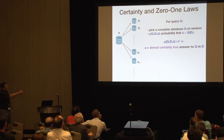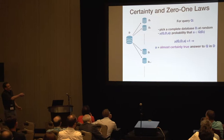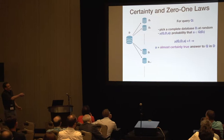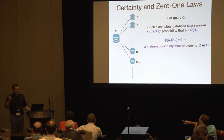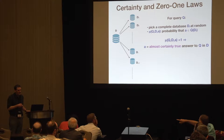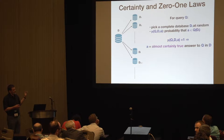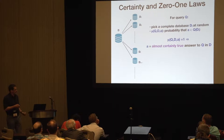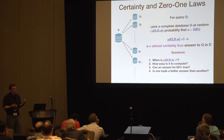How do they meet? We have infinitely many databases that an incomplete database can represent. The idea is like the 0-1 law: pick a complete database at random. If I have a tuple A that might be an answer to a query, I calculate the probability that A belongs to the answer to Q in a randomly picked database represented by the incomplete database. If this probability is 1, then it means A is an almost certainly true answer to Q in D. Questions to ask: when is this probability 1, and how easy is it to compute that? Or can an answer be 50% true? Can one tuple be a more likely answer than another?